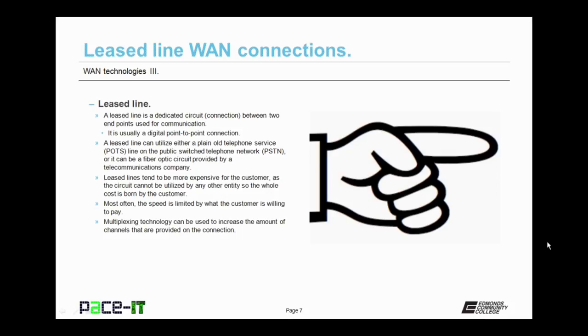A leased line is a dedicated circuit or connection between two endpoints used for communication. When we're talking about IT, a leased line is usually a digital point-to-point connection. A leased line can utilize either a plain old telephone service line, a POTS line, on the public-switched telephone network, or it can be a fiber-optic circuit provided by a telecommunications company.